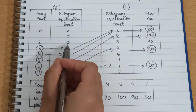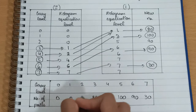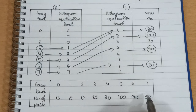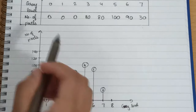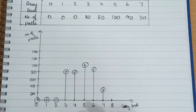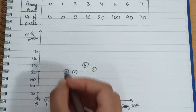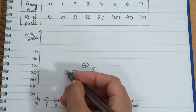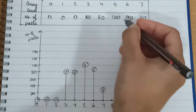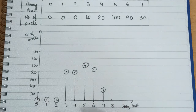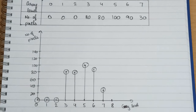The first three values were zero, so we take them as zero. This gives us our final result, after which we draw the final histogram. For the first three gray levels the values are zero, for 3 it is 80, for 4 it is 80, for 5 it is 100, for 6 it is 90, and for 7 it is 30. This is our final histogram after mapping. That's it for this lecture — I will see you in the next one.